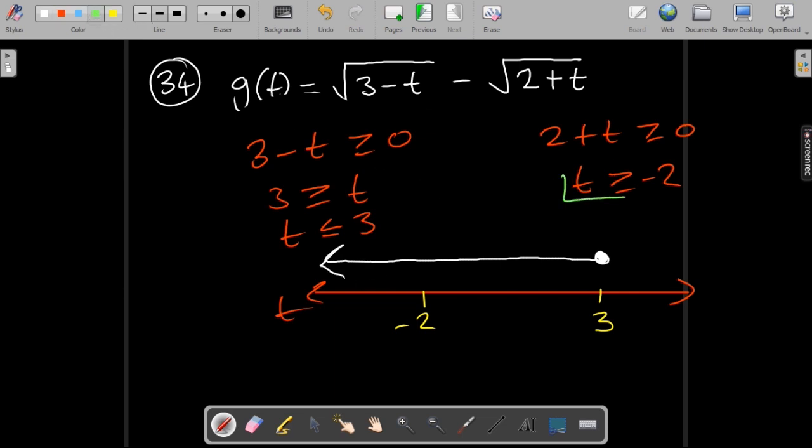But this one now says t greater than or equal to minus 2. So we're starting at minus 2 and we're going this way. So we want both of these to be defined so that the whole function can be defined. Which means that we only have to include the portion where both of them are defined. That is where they overlap.